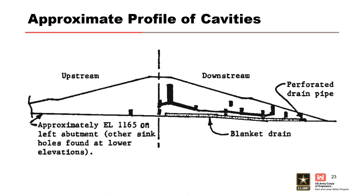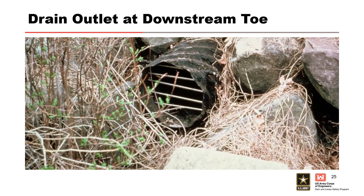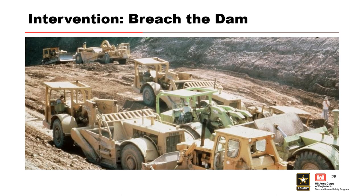Here are the voids viewed in section. It's estimated that approximately 250 cubic yards of material was missing from the embankment. At most locations, the finer portion of fill was missing with the coarse portion left in the bottom of the cavity. Even with so much material missing, no visible signs of sediment or lost fill from the cavities was observed at the drain outlets. Once the numerous voids were discovered during excavation, a decision was made to quickly breach the dam prior to a new storm. You can see how steep the left abutment is in the background of this photo.